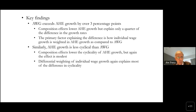Composition effects lower average hourly earnings growth by a substantial amount, consistent with intuition, but they explain only a quarter of the difference in the growth rates. The primary factor explaining this large difference is how individual wage growth is weighted in average hourly earnings growth compared to average wage growth. Similarly, average hourly earnings growth is less cyclical than average wage growth — composition effects lower cyclicality, but that effect is modest. It's differential weighting that explains most of the difference in cyclicality.